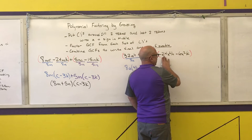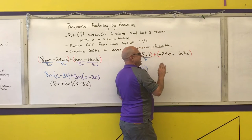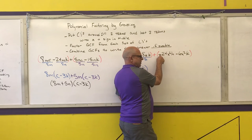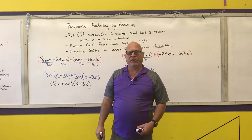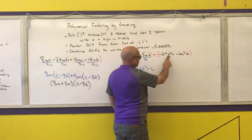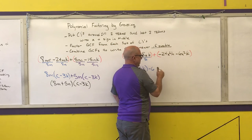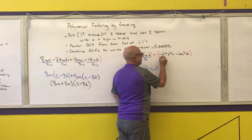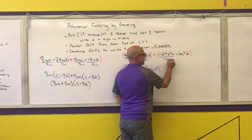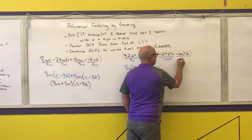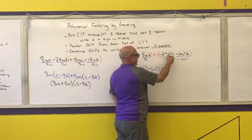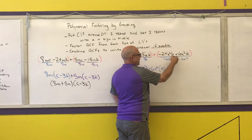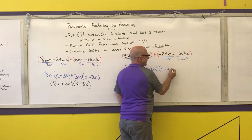The greatest common factor between negative 24 and negative 6 is negative 6 — making it negative because that sign is negative. Write down the lowest power of each variable that appears in every term: the only variable is X, and its lowest power is squared. After division: negative 24 divided by negative 6 is 4, X squared over X squared is 1 leaving H; negative 6 divided by negative 6 is positive 1, leaving K.